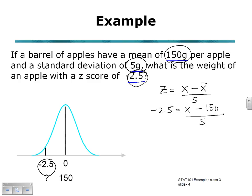So to solve the equation, multiply both sides by 5. So the 5's on the right-hand side will cancel. And rewriting our negative 12.5 on the left-hand side equals X minus 150 on the right-hand side.